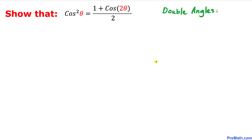Welcome to Pre-Math. In this video tutorial we are going to prove the famous double angle identity. We are going to prove that cosine squared theta equals one plus cosine of two theta divided by two. Let's go ahead and get started with the proof.